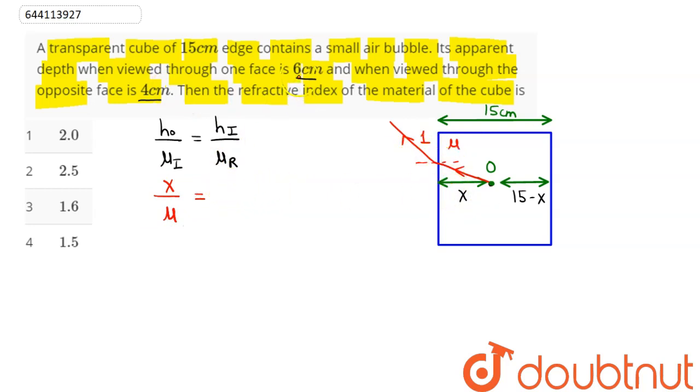given out as 6 centimeter, when viewed through 1, divided by refractive index of refracted ray as 1. So this is our first equation.